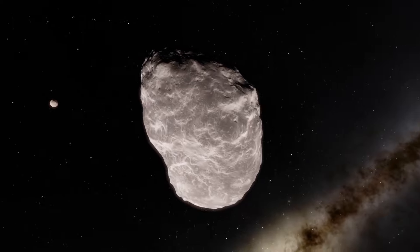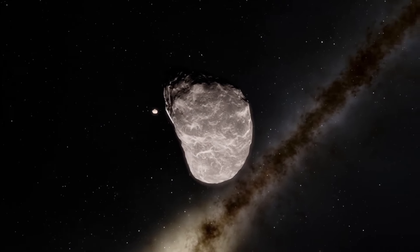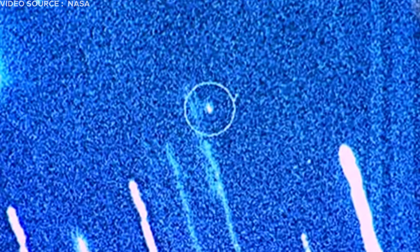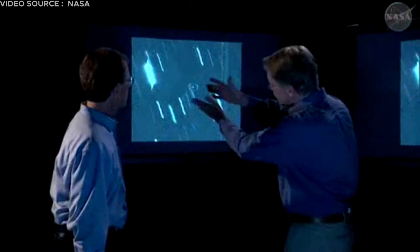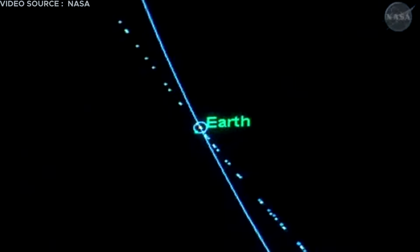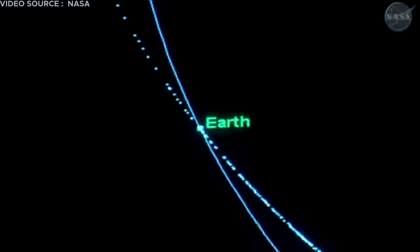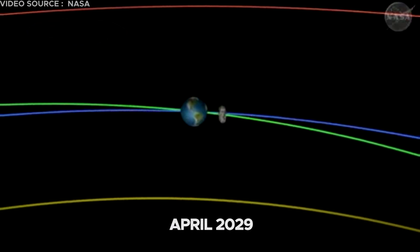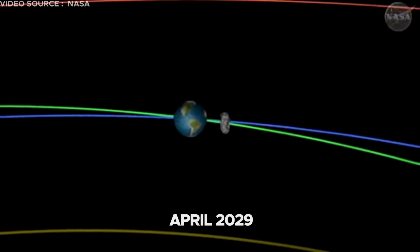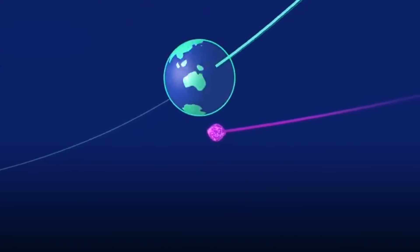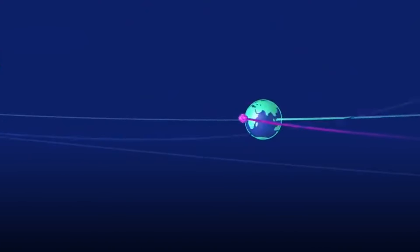Initially labeled the most hazardous asteroid that could impact Earth, Apophis was discovered in 2004. Initially, observations suggested a concerning 2.7% probability of Apophis impacting Earth in April 2029. Upon closer scrutiny of its orbit, the 2029 impact scenario was ruled out.